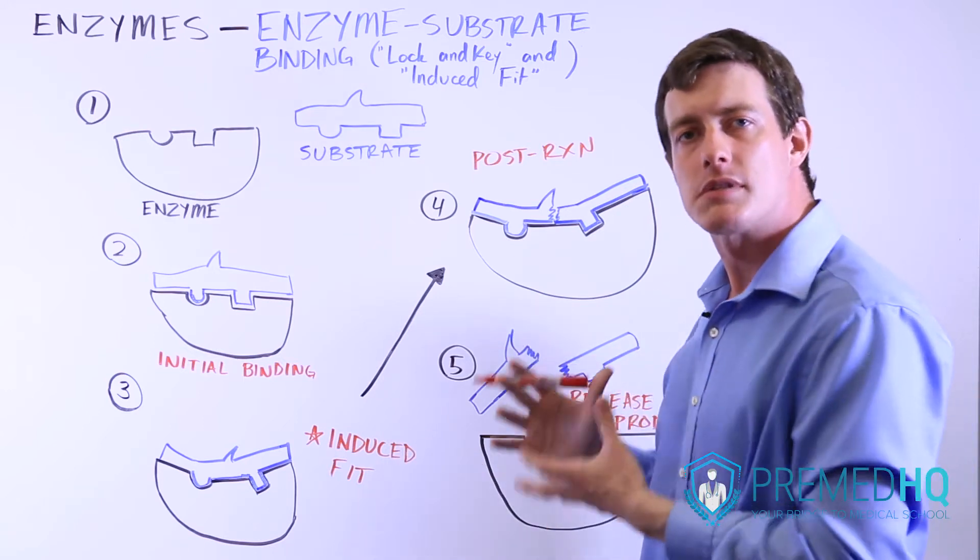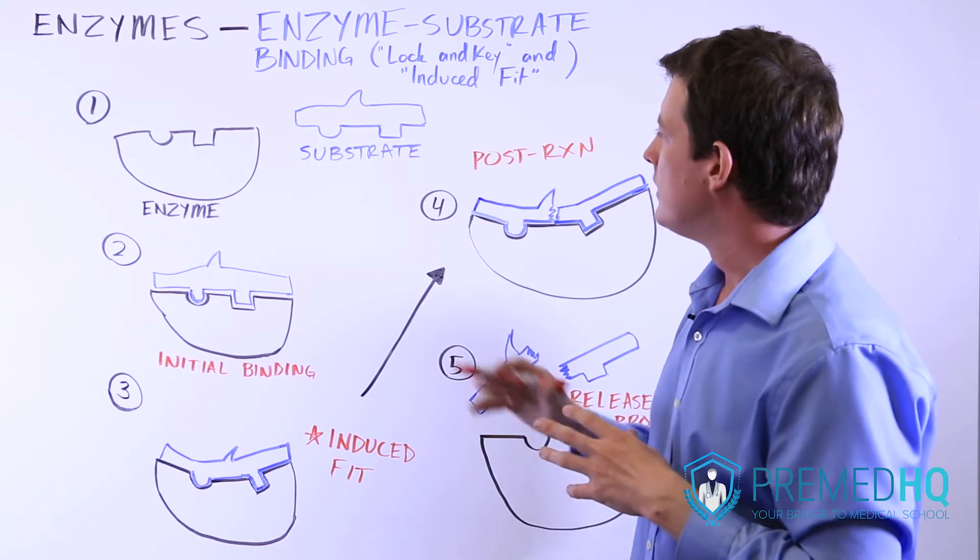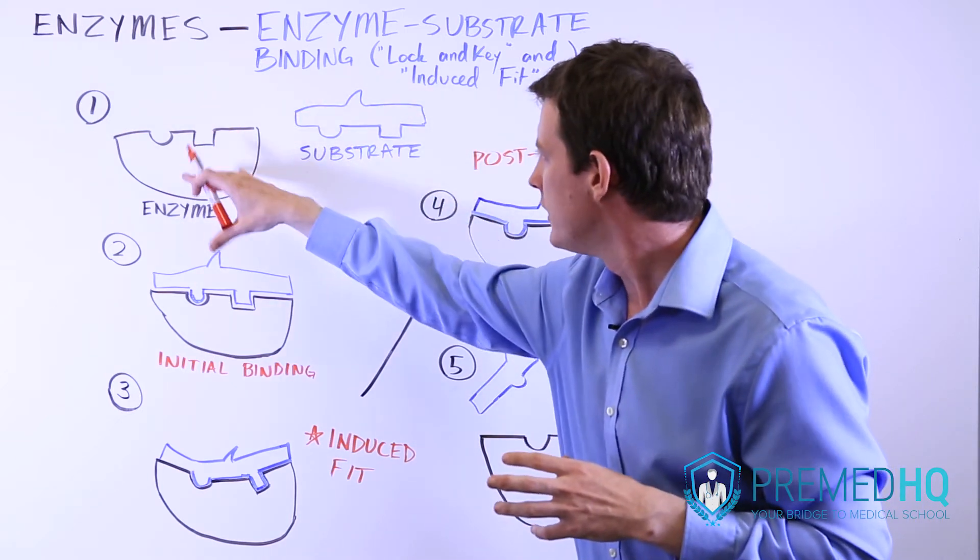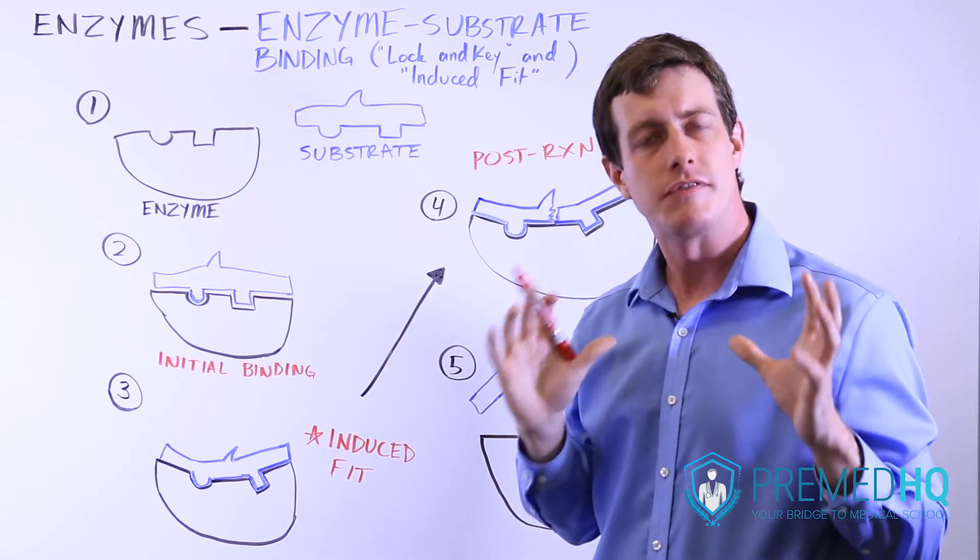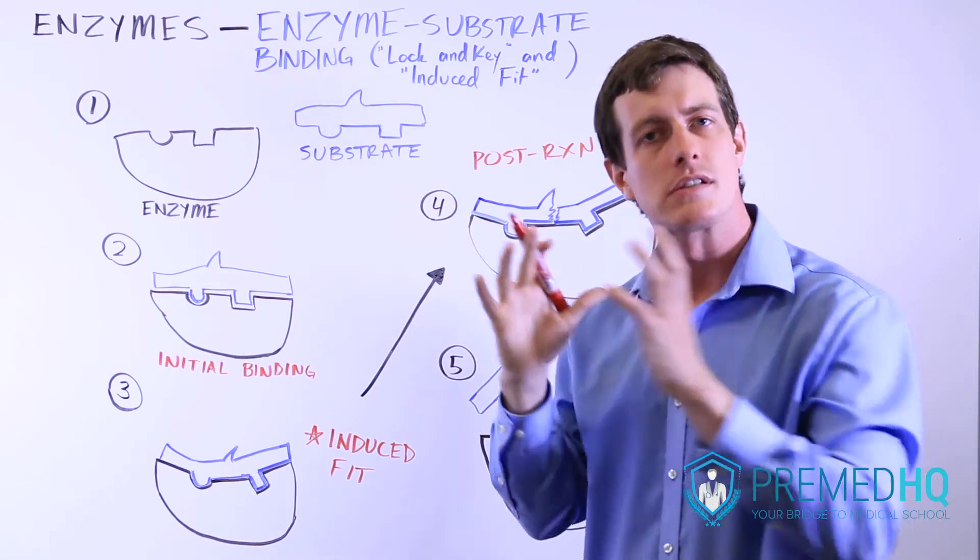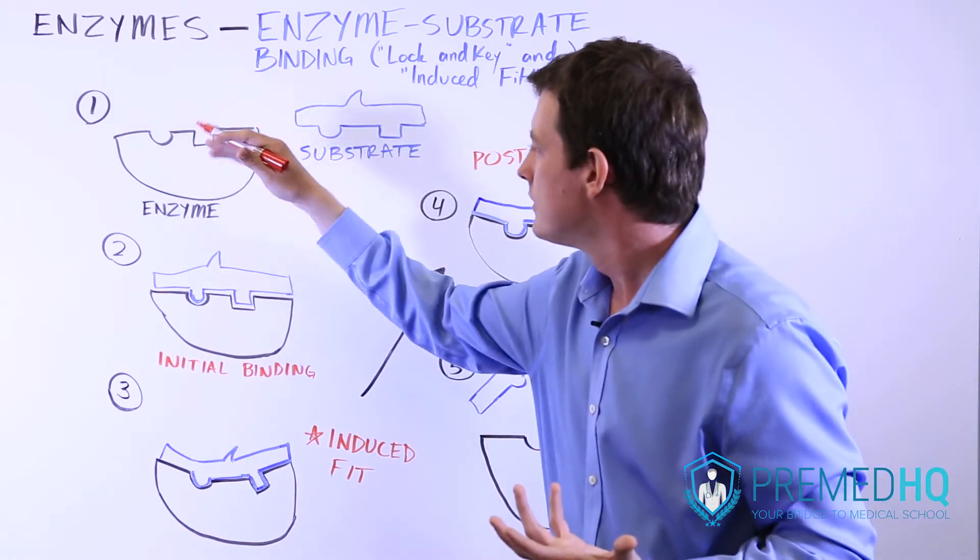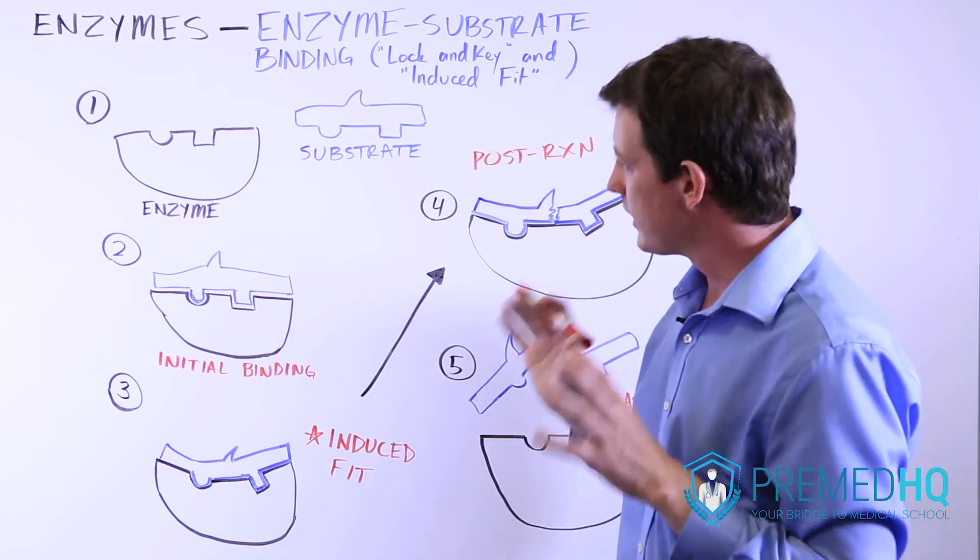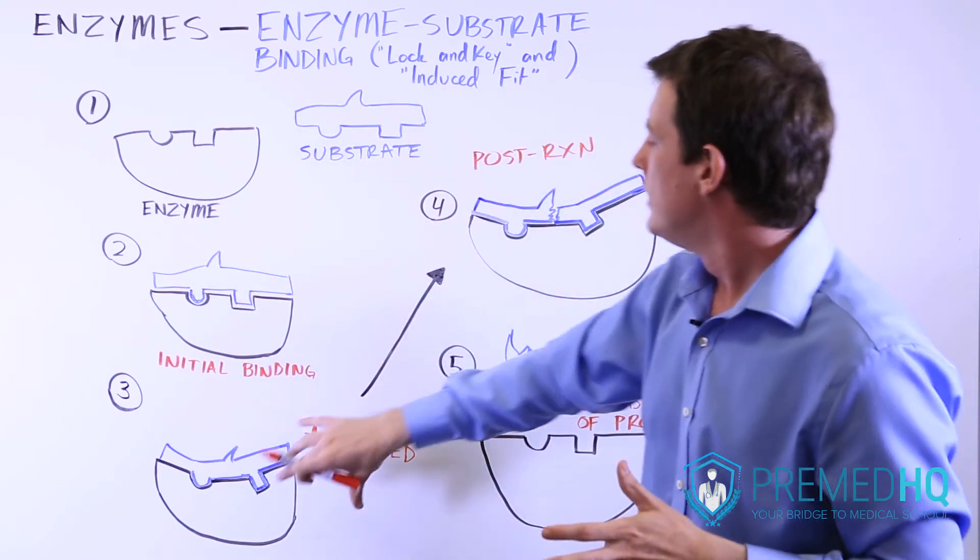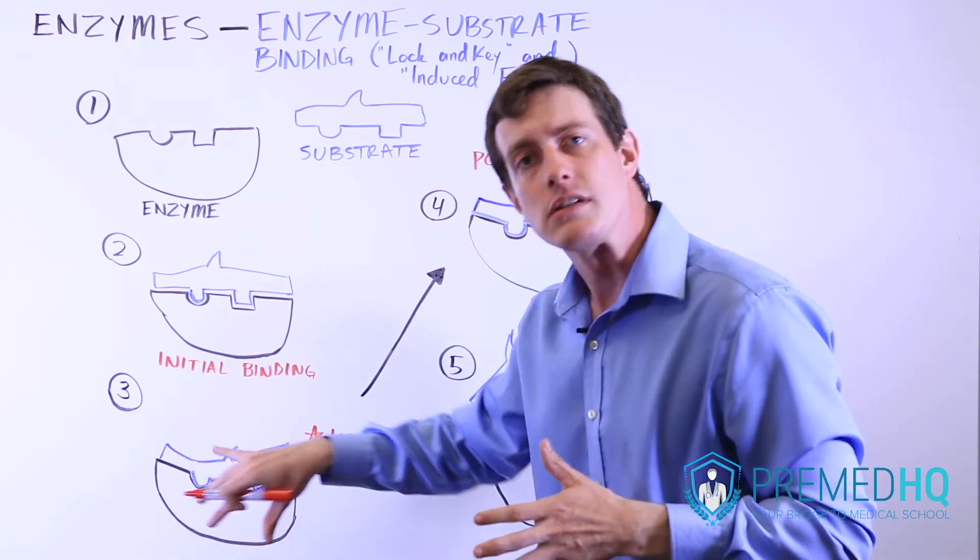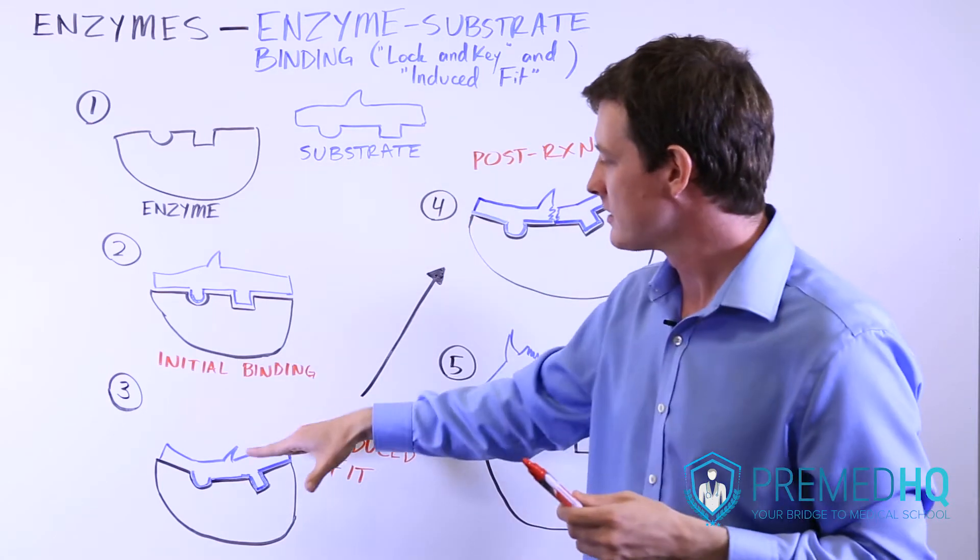With enzymes and substrates, there's a lock and key model that says that the substrate is the perfect fit for that enzyme. That is what underscores the specificity, meaning that an enzyme is specific for its substrate and vice versa. The substrate fits into the enzyme and it has that specificity. And then if you're using the induced fit model, and this is something that occurs a lot, the enzyme will undergo a conformational change as soon as the substrate is loaded.